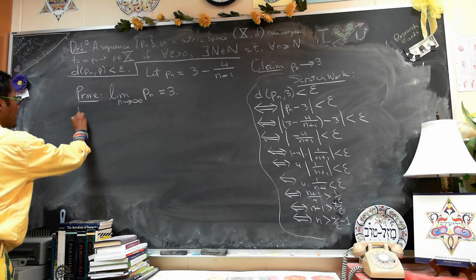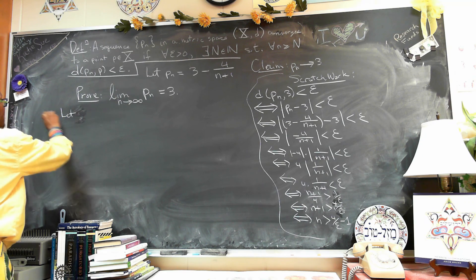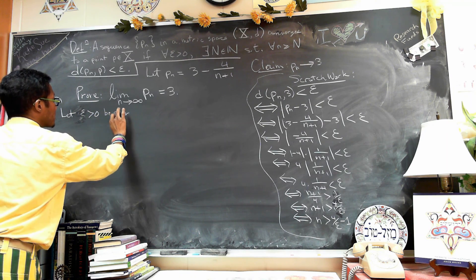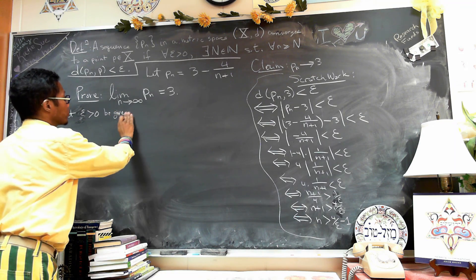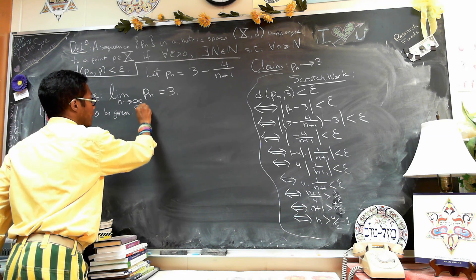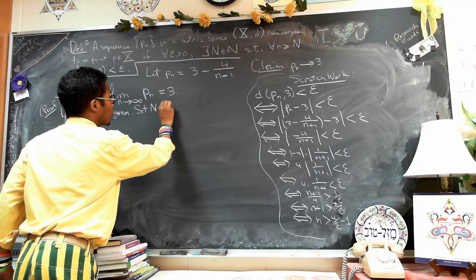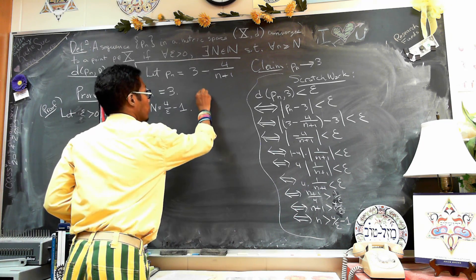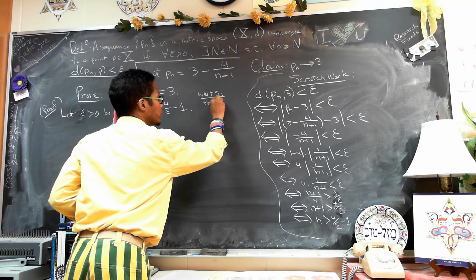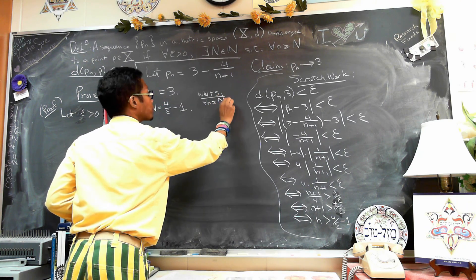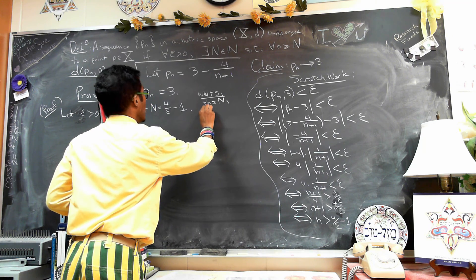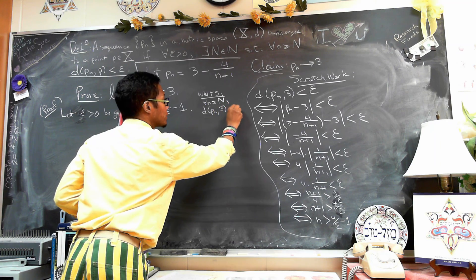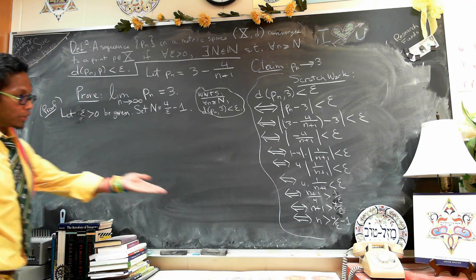Our formal proof is the following. Let epsilon greater than 0 be given — every single convergence proof will start with the same line. Set capital N equal to 4/epsilon minus 1; that's what the scratch work gave us. We want to show that for all little n greater than or equal to capital N, we have that the distance from P_n to 3 is less than epsilon. We're basically just running those implications backwards.